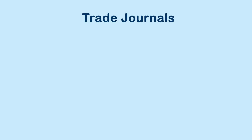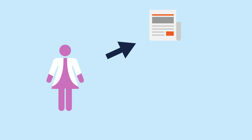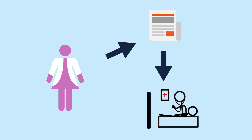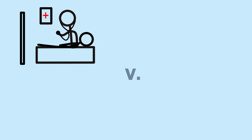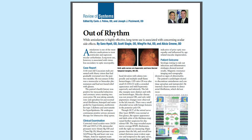Trade journals are publications specifically aimed at professionals in a field. These are often published by a professional organization or association and focus on a single field, like nursing or medical assisting. Written by experienced professionals, these resources provide useful information in a clear and concise manner, so that it can be applied on the job. The focus of articles is application of research rather than the research itself. For example, a trade journal article might mention a new drug and summarize the results of the trials, rather than describe a particular trial in detail.